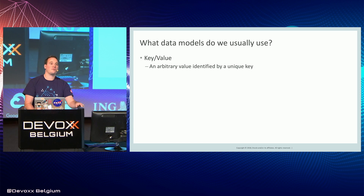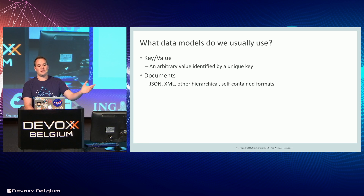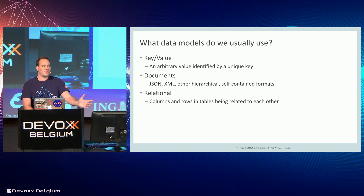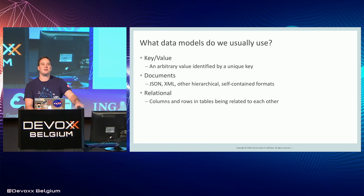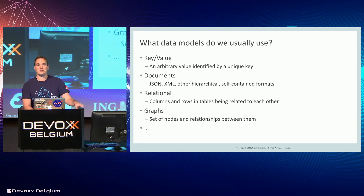Key-value is an arbitrary value identified by a unique key. Documents are JSON as well as XML and anything else that's a hierarchical, self-contained document — not PDF or Word files, which some people on the business side confuse. Relational is probably the most common one, with table rows and columns relating to each other. And then graphs, which are nodes and relationships between nodes. These four cover 99% of use cases today.